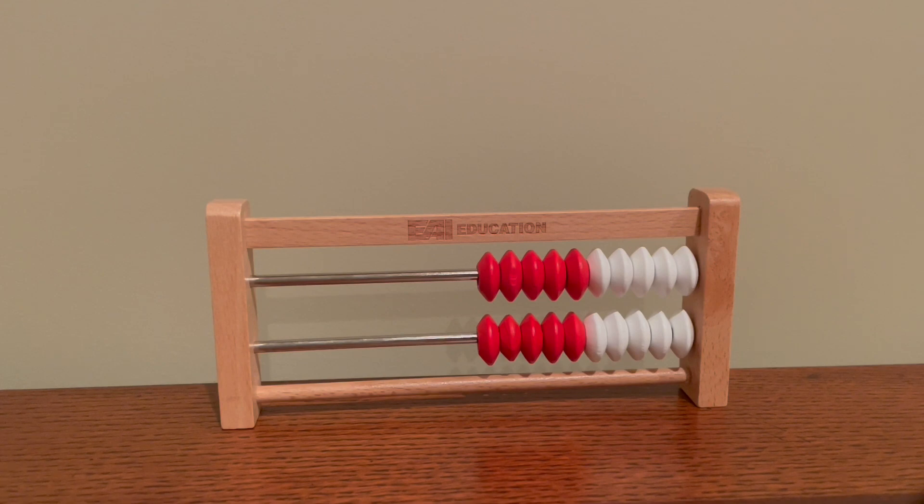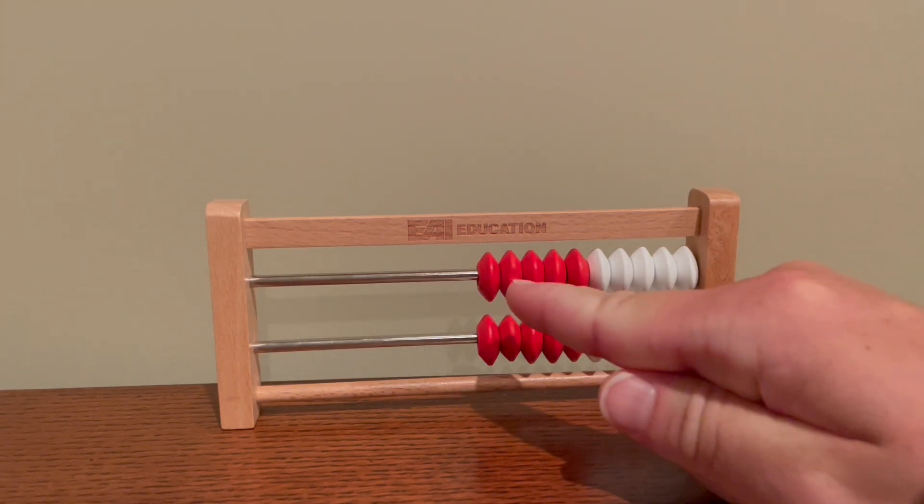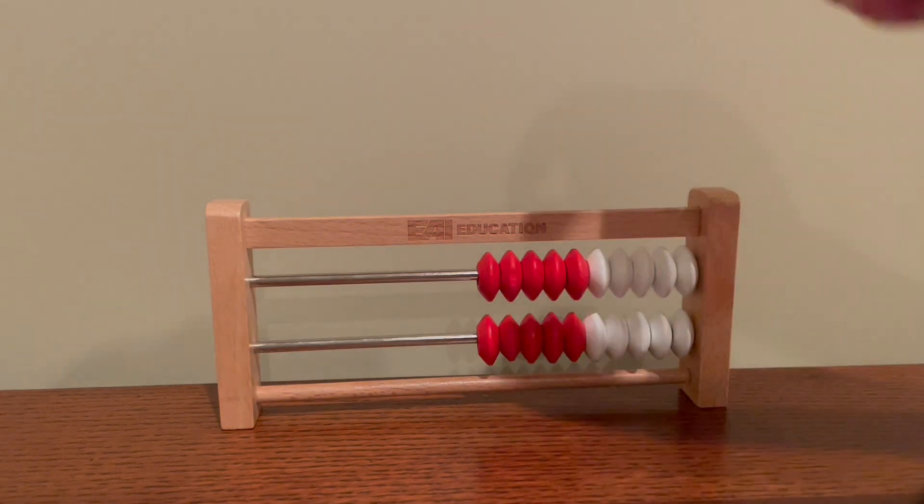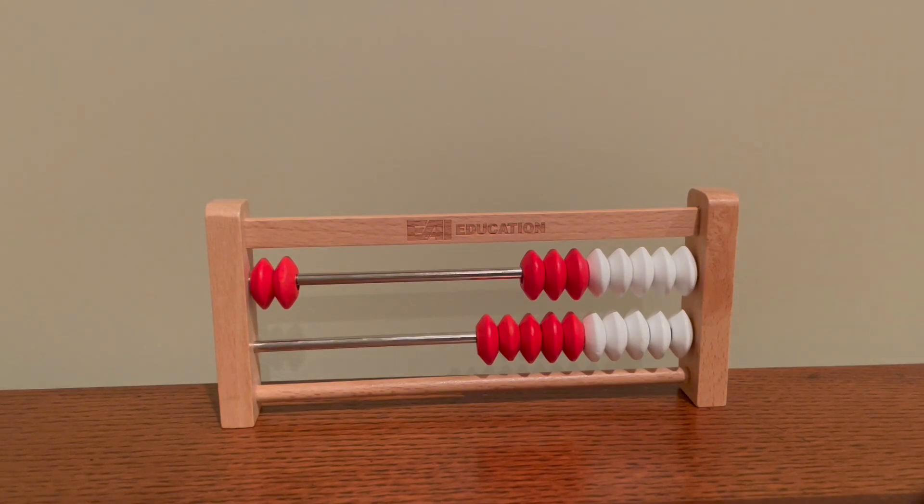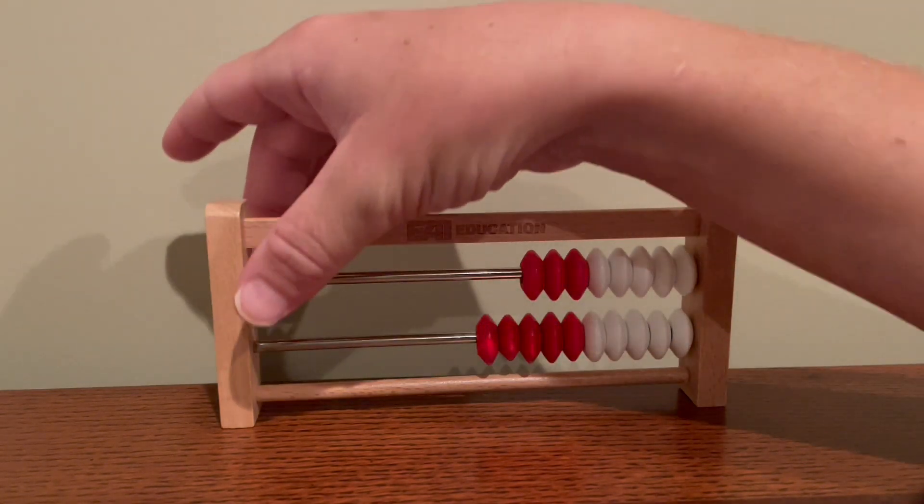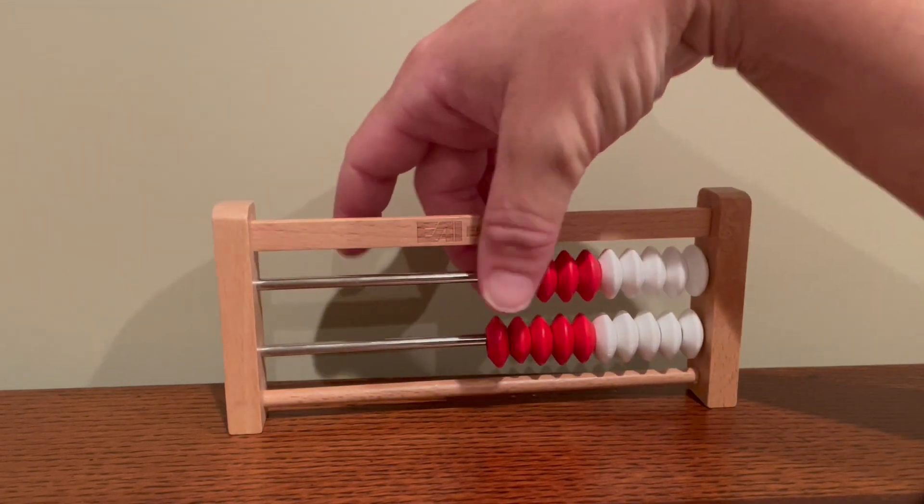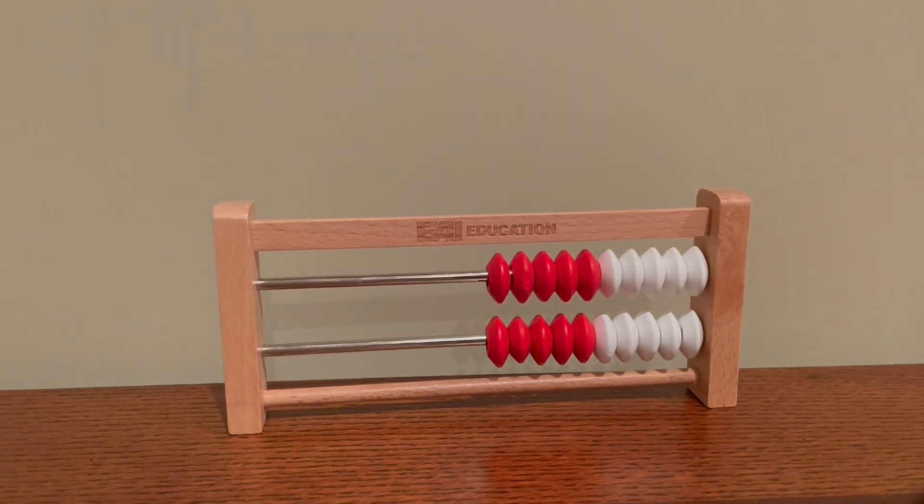If I wanted to show the number two, in my head I would think one, two, and then I would grab them and move the two beads to the left. If I wanted to represent another number, I would put the beads back in the starting position before I moved on to showing another number.